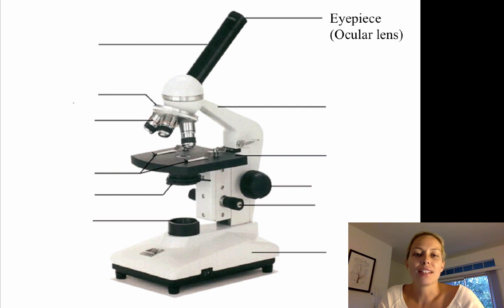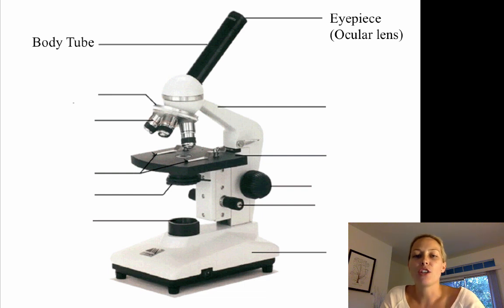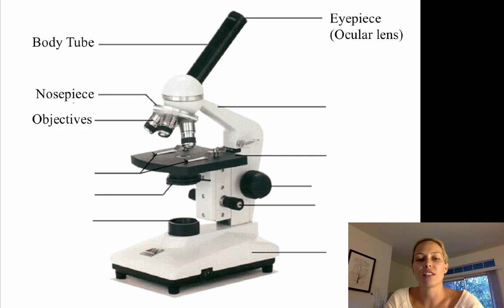The eyepiece contains the ocular lens and it typically has a magnification of about 10x. Next is the body tube, which is responsible for connecting the eyepiece with the nosepiece. The nosepiece holds the objective lenses.